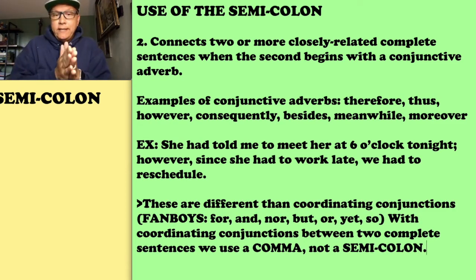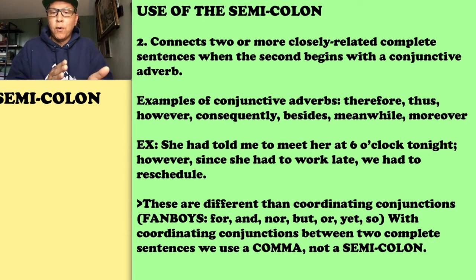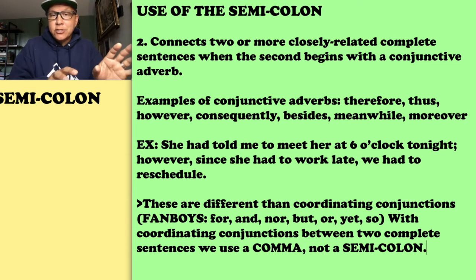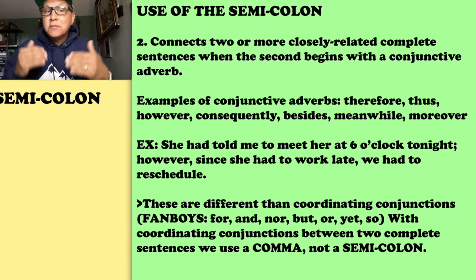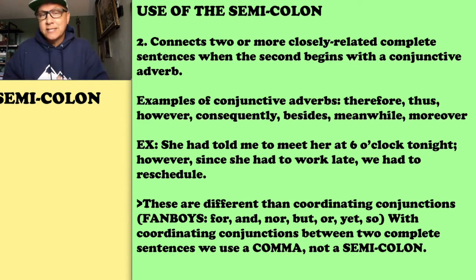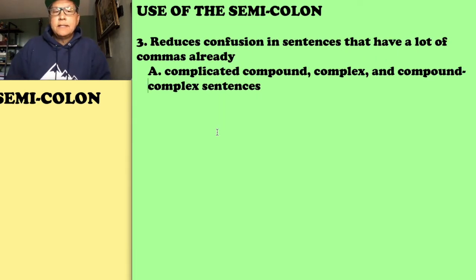An important distinction: a coordinating conjunction is different from a conjunctive adverb. If you're using one of the FANBOYS — for, and, nor, but, or, yet, so — between two complete sentences, you use a comma. If you have a complete sentence followed by a conjunctive adverb and another complete sentence, you use a semicolon. One is grammatically correct and the other is not.